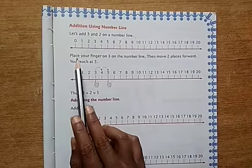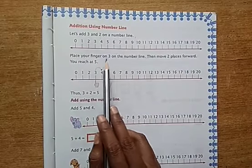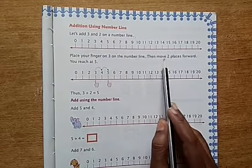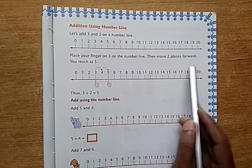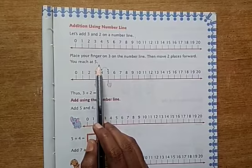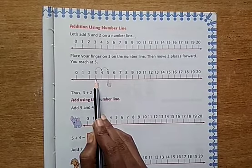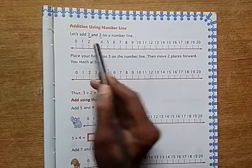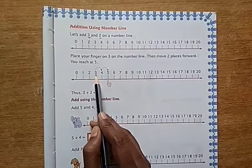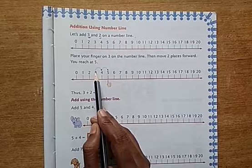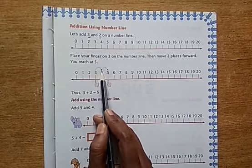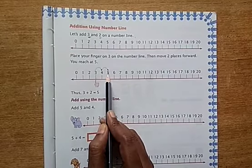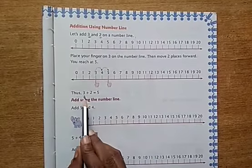on number line. Place your finger on 3 on the number line, then move two places forward. You reach at 5. See here, first place your finger on 3. For 3 and 2, place your finger on 3, then move two places forward from 3: first step, second step. We reach 5, so our answer is 5. Thus, 3 plus 2 equals 5.